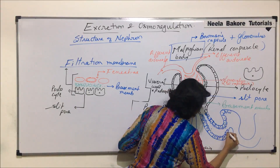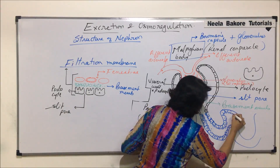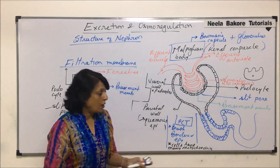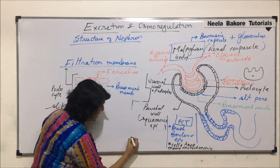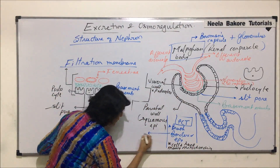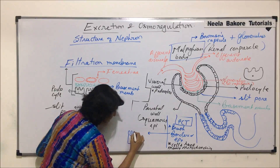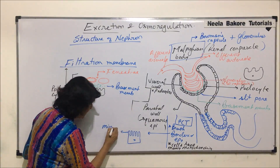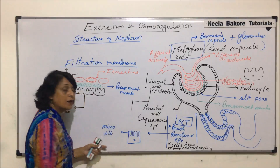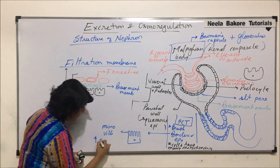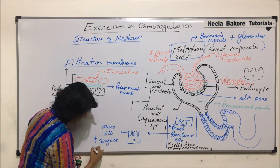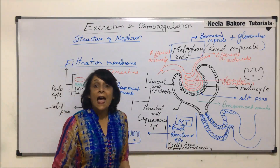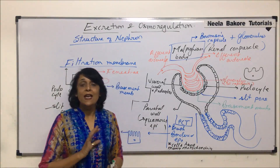This brush bordered epithelium continues all throughout PCT. Each cell would have these finger-like projections which we call microvilli. Microvilli increase the surface area for absorption, because from here, actively, most of the things would be absorbed.